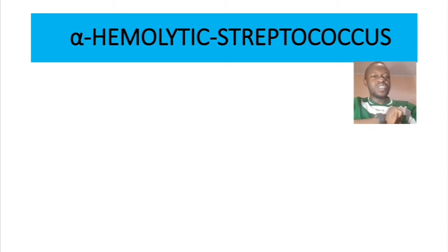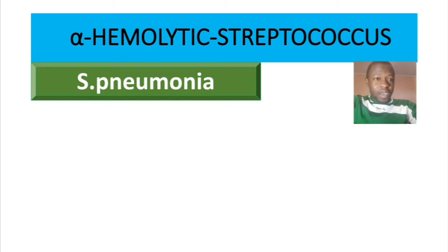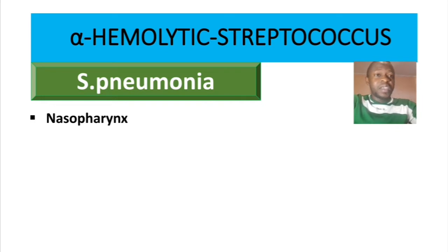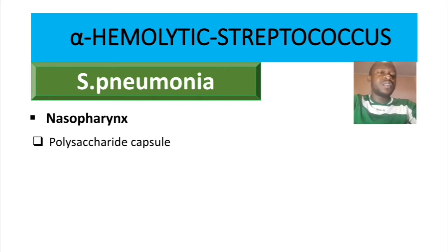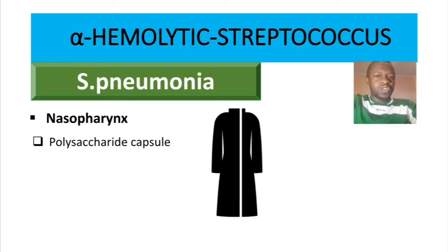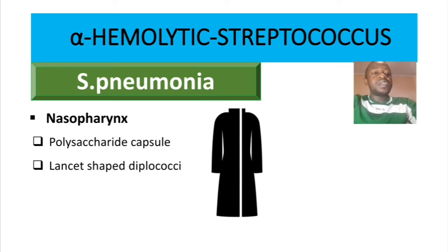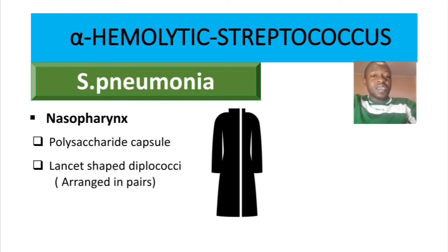Let's start with Streptococcus pneumoniae. This bacteria normally colonizes the nasopharynx. It is an encapsulated bacteria — specifically a polysaccharide capsule. From now on, encapsulated bacteria will be represented by a black cut symbol. Streptococcus pneumoniae is usually described as lancet-shaped diplococci, sometimes described as arranged in pairs, which is the same as diplococci.